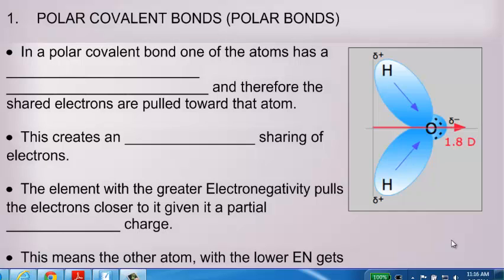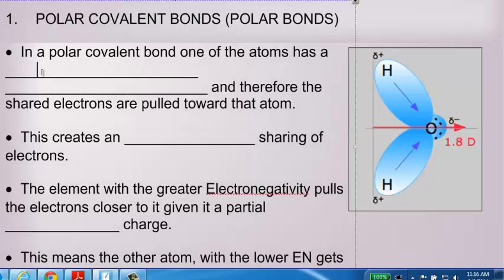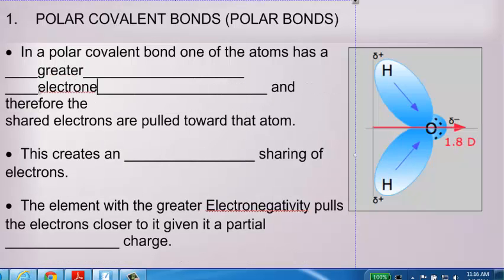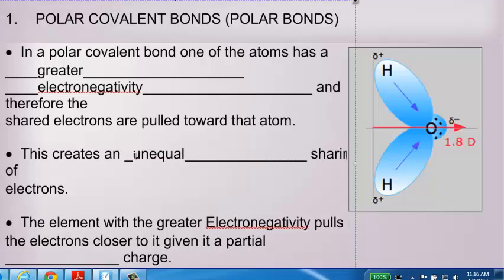The first type of covalent bond is called a polar covalent bond, and in a polar covalent bond, one of the atoms has a greater electronegativity. And as a result, it has greater attraction for electrons, and so it pulls the electrons towards it. As it pulls the electrons towards it, it creates an unequal sharing of electrons.